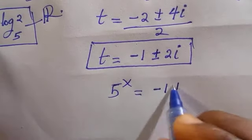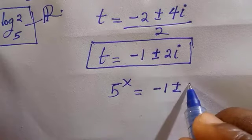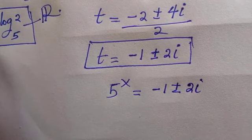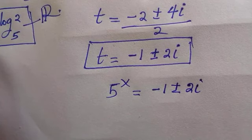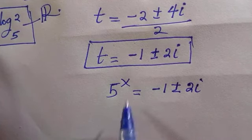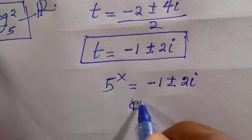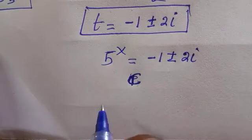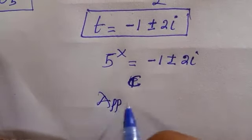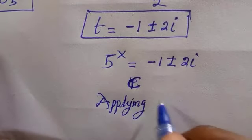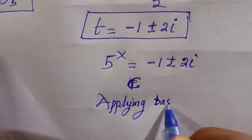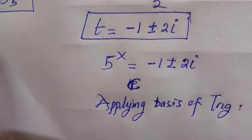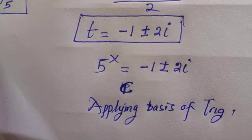I mean it is a complex root which can have 5 to the power x equals minus 1 plus or minus 2i. Indeed we can go further by getting the solution to this, but trust me everything is in complex. Then the method we can apply to get this is we apply some trigonometry, the basis of trigonometry. So by applying that, we are going to get the result of x for this as well.